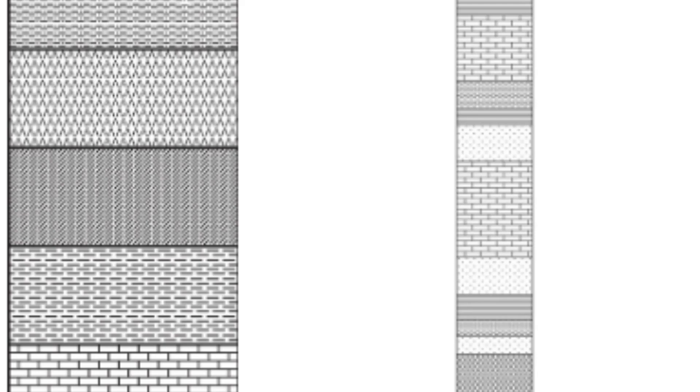Field observations: The process often begins with detailed fieldwork, where geologists examine the outcrop exposures of sedimentary rocks. They carefully document the lithology, rock type, sedimentary structures, fossil content, and any other relevant features present in the rock layers. Field observations provide the basis for identifying potential correlations between different strata.